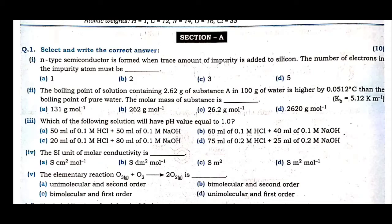The third MCQ is from chemical ionic equilibrium: which of the following solutions will have a pH value equal to 1? Remember — more acid means less pH. The pH scale goes from 0 to 14; between 0 to 7 it is acidic, between 7 to 14 it is basic, and exactly 7 is neutral. For pH equal to 1, the H⁺ concentration should be 0.1 molar, since pH = -log[H⁺]. Four options are given; check the concentration for each.